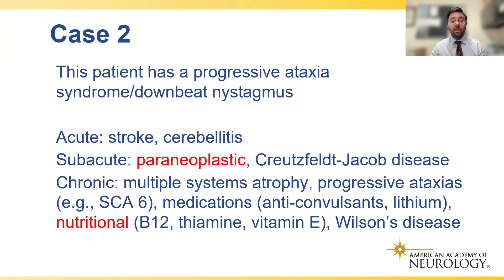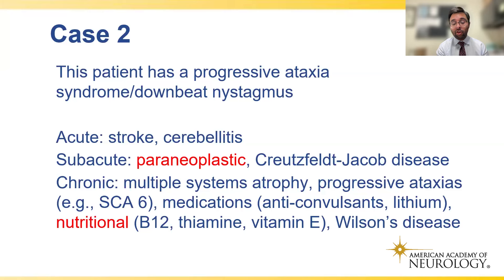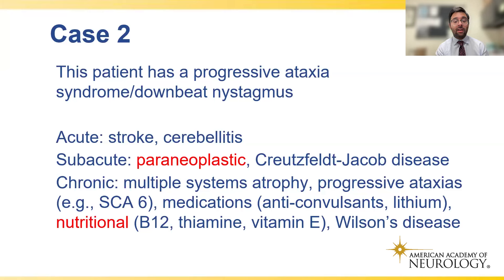For chronic cerebellar ataxia, consider long-standing medication use — phenytoin (Dilantin) and other anticonvulsants, lithium. Nutritional causes are especially important because they're reversible: B12 deficiency, thiamine deficiency, vitamin E deficiency, and genetic causes of low vitamin E levels. Wilson's disease — abnormal copper processing — is also treatable and should not be missed as a cause of progressive ataxia syndrome.